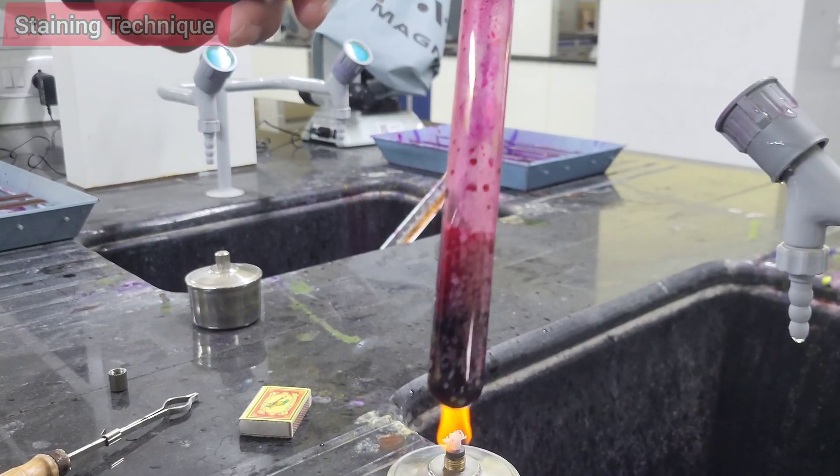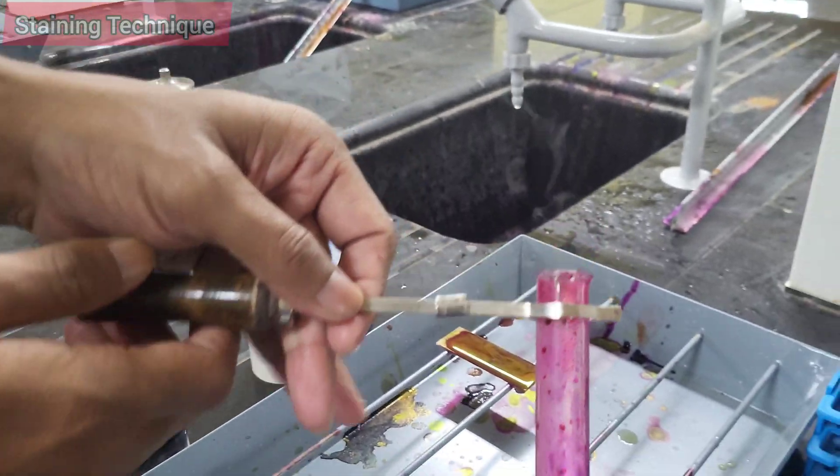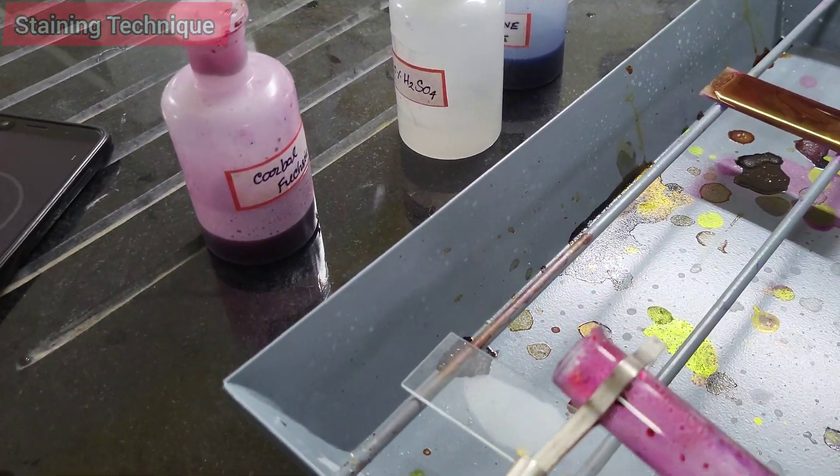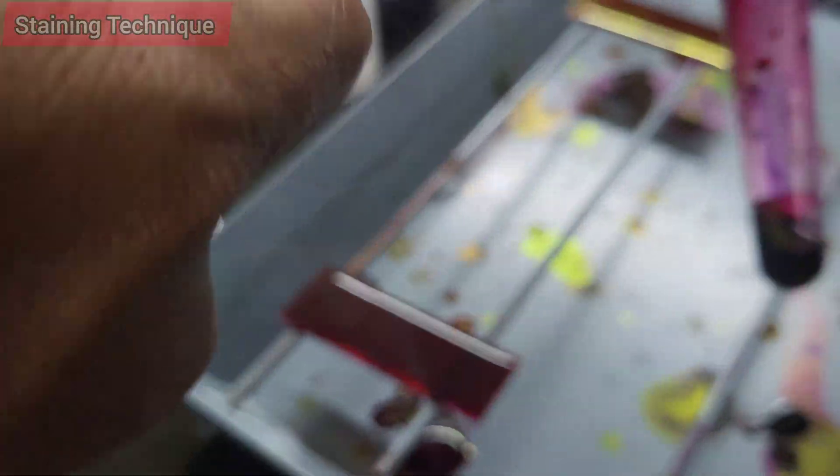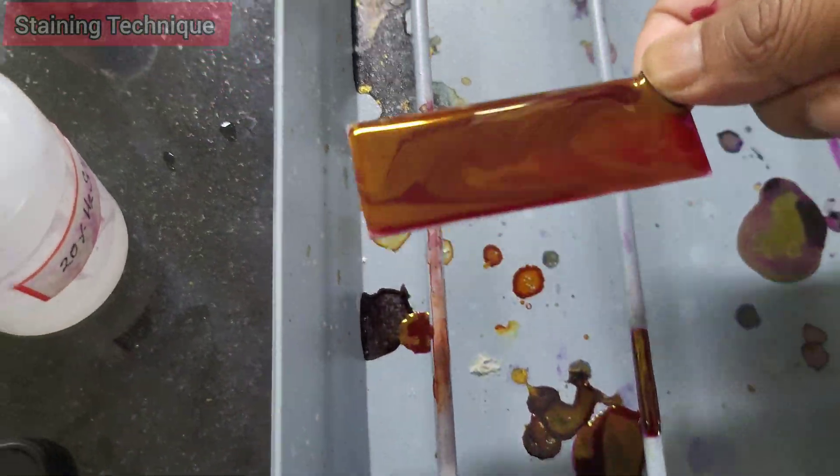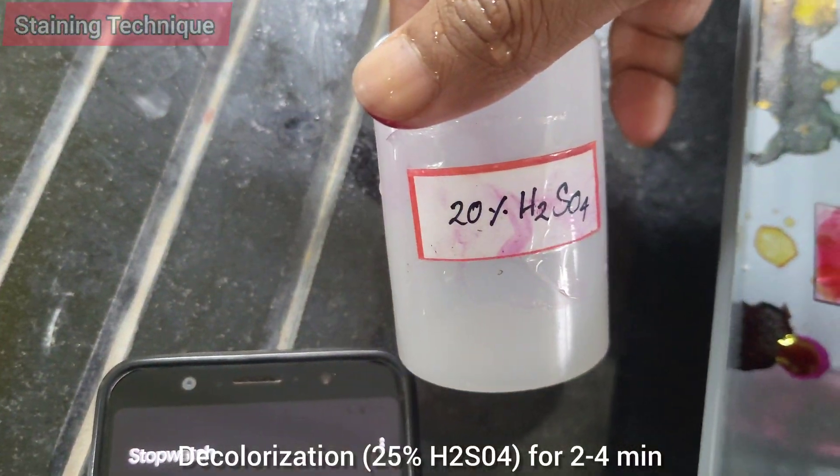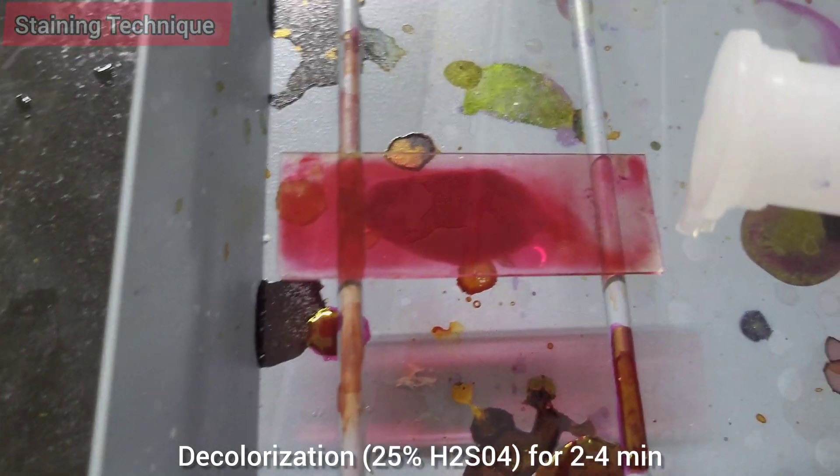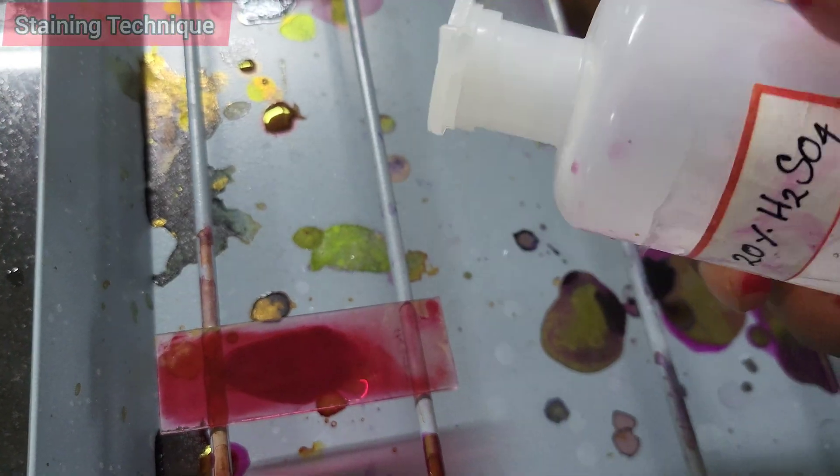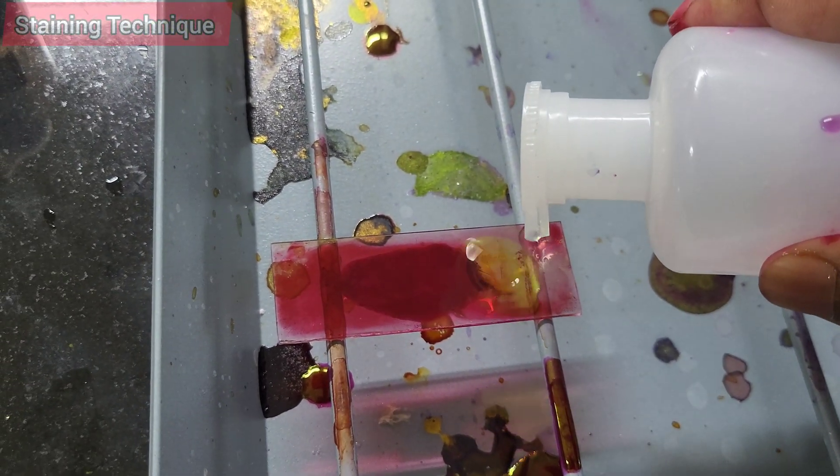What is the composition of carbolfuchsin? Basic fuchsin, phenol, ethanol, and distilled water. After five minutes, rinse the slide gently with tap water to remove excess stain. Step two: decolorization, done by pouring 25% sulfuric acid over the slide and allow the slide to stand for two to five minutes. A properly decolorized slide will appear colorless or light pink.